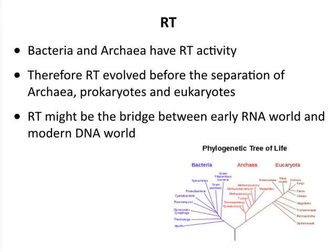Reverse transcriptases are really everywhere — in bacteria, archaea, and eukaryotes. In bacteria, reverse transcriptases give rise to diversity in certain proteins. These are quite old proteins that must have arisen before the separation of these three kingdoms of life. Some people believe this enzyme evolved to create the DNA world — that the first life was an RNA world with RNA genomes, which eventually evolved into a DNA world, perhaps via reverse transcriptase.